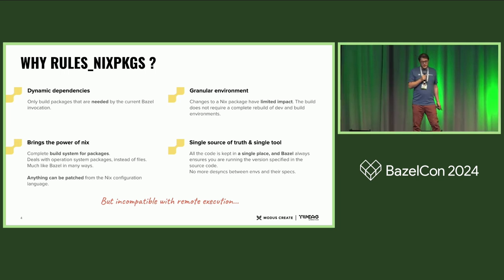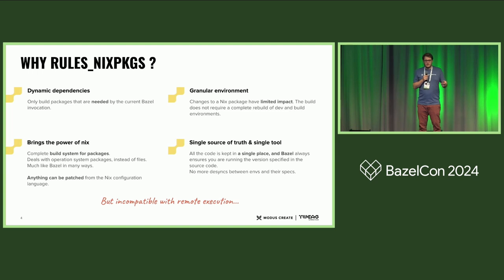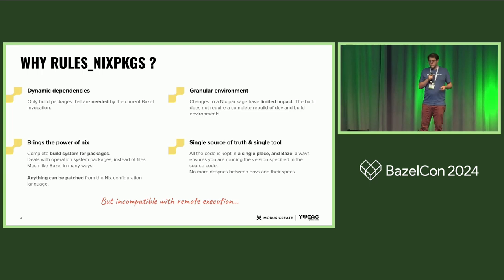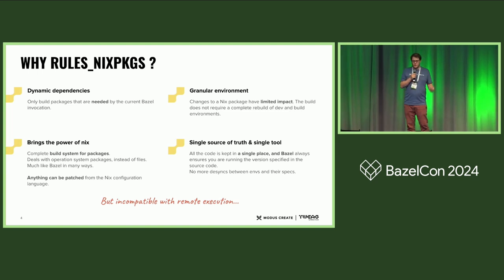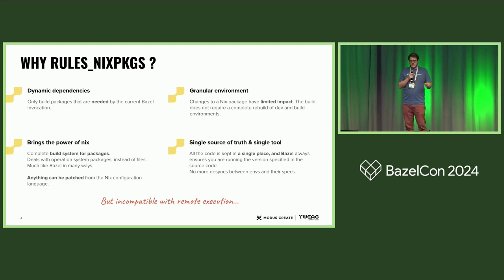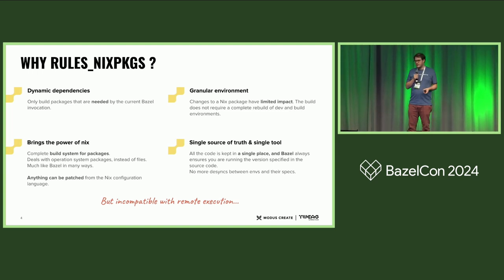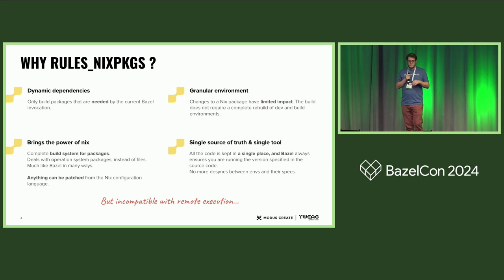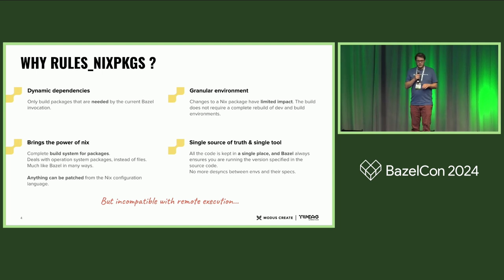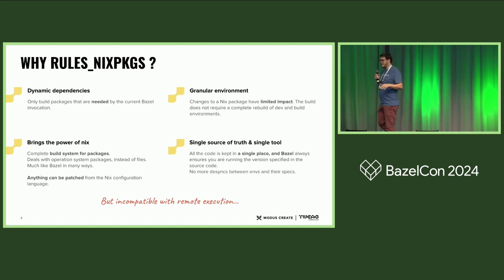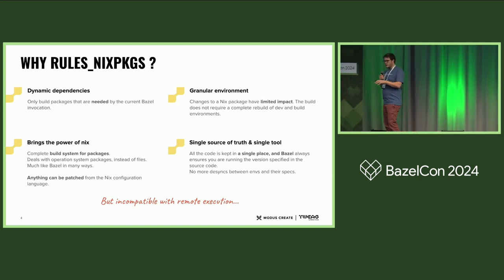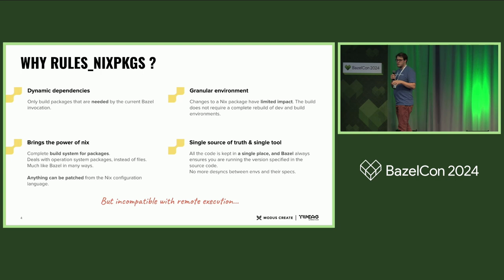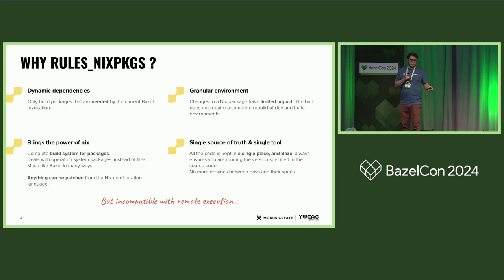What I love most is that everything is in the single monorepo — all the Nix files. The definition of all your build dependencies are there. You are not relying on any Docker, not relying on any environment, not relying on anything. Everything is sourced inside the repo.